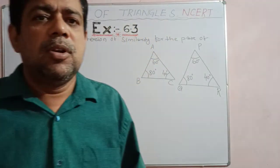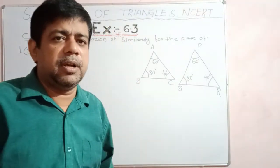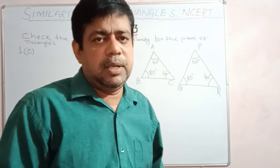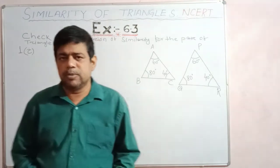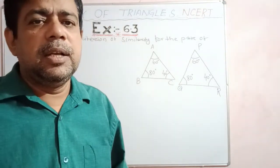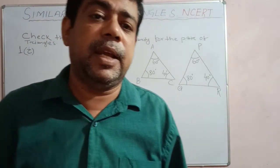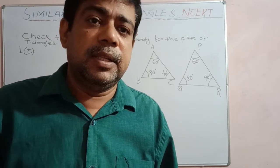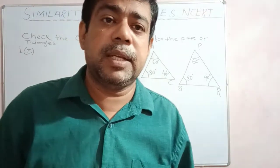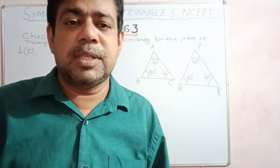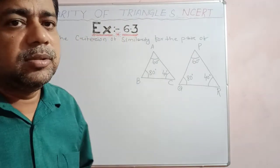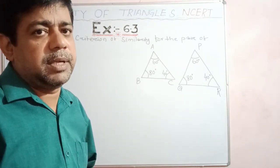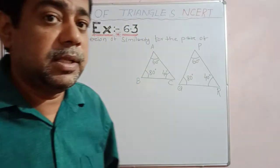Dear students, in this class we are going to start the problems from Exercise 6.3 of your standard 10 mathematics textbook. In this section we are going to discuss problems based on the criteria of similar triangles. The criteria we are covering are angle-angle similarity, side-side-side similarity, and side-angle-side similarity.